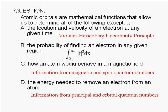Whereas the principal and orbital quantum numbers allow us to determine the energy of an electron and the energy needed to remove the electron from the atom.